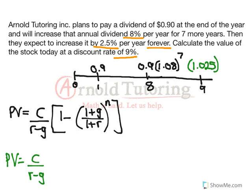I've drawn out the timeline here. Timelines are really important and helpful to see how many time periods we're dealing with and where certain cash flows are happening and how much they're worth at those times. I'm going to look at the first 8 years as one piece, then the forever years after time 8, and we'll pull those together. The value of the stock is just the PV of all dividend payments expected.